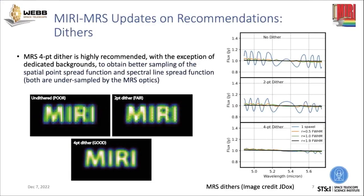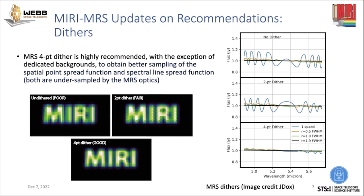Moving to updated recommendations for cycle two: for MRS, for any science observation, we really recommend a four-point dither pattern. This is because the MRS is undersampled — both the spatial point spread function and the spectral line function are undersampled. So spatially, for an extended source you really need the four-point dither to resolve the point spread function, and even if you don't care about the structure of your source, the four-point dither pattern is needed to get good sampling of the spectral line resolution. We recommend that for all targets.